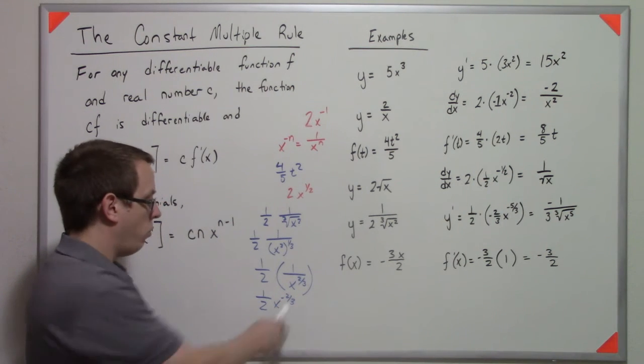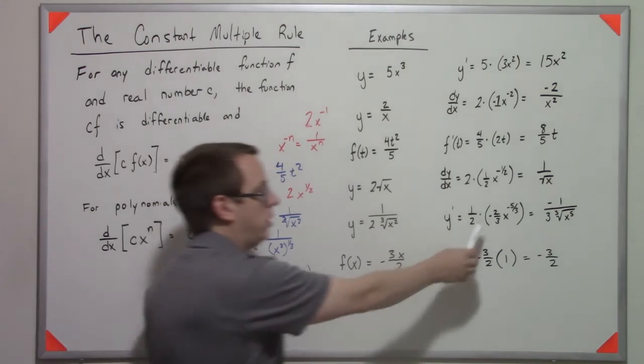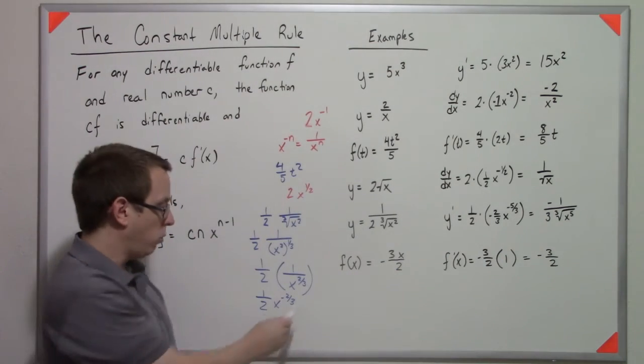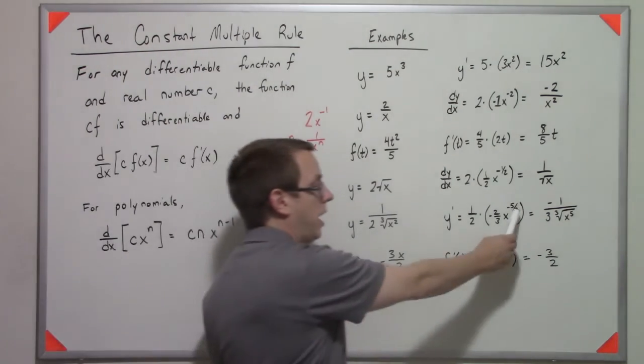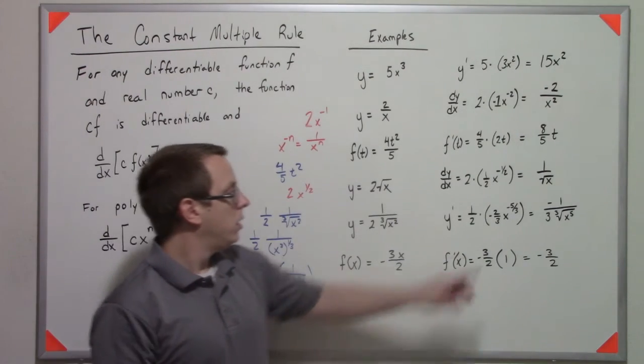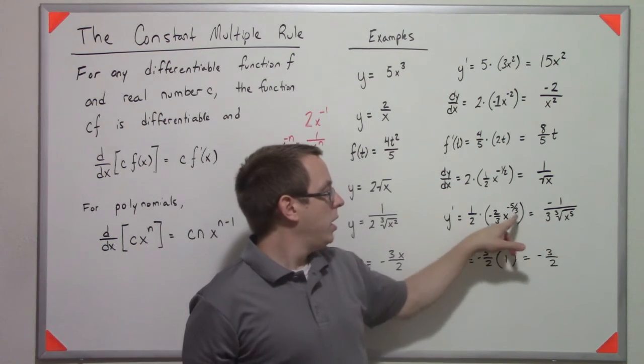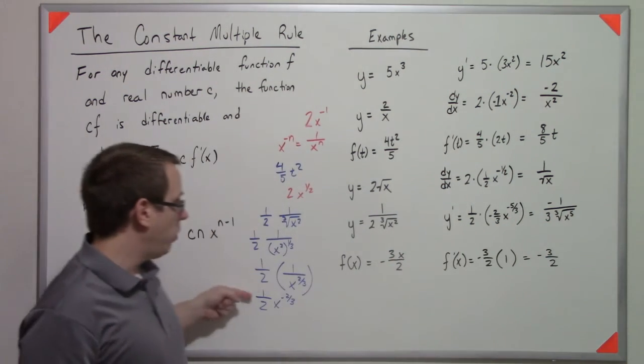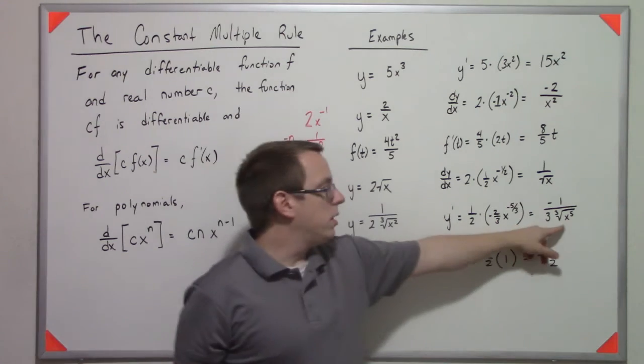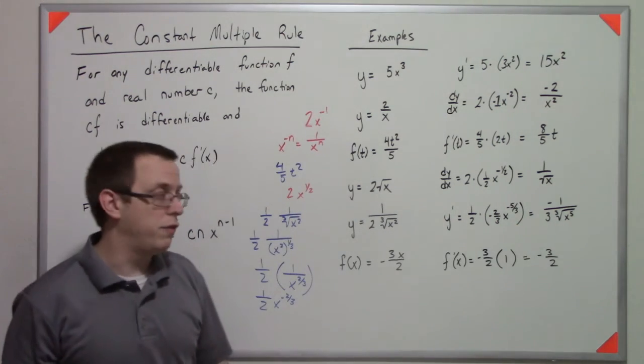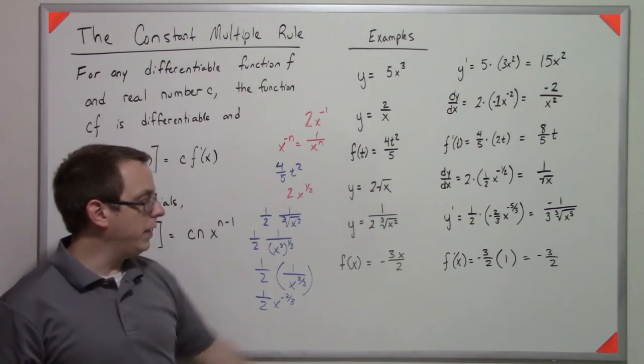So by doing that, we bring down the power, negative 2 thirds. We subtract 1 from negative 2 thirds to get negative 5 thirds. The 2's cancel. So we have negative 1 over 3, and then by following the inverse of this logic, we get this as the cube root of x to the 5th. And that's y prime.